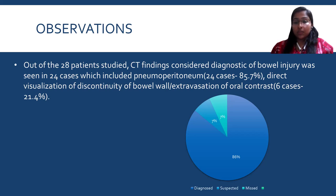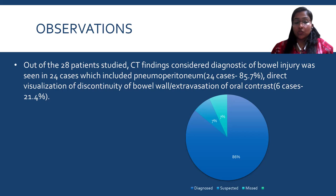Among the remaining 14%, 7% were suspected to have bowel injury. These were two cases in which pneumoperitoneum or accurate visualization of discontinuity was not seen; however, other features like bowel wall thickening, hypoenhancement, intramural air, intraperitoneal free fluid without solid organ injury, and mesenteric hematoma were seen, raising suspicion. These cases were found to have perforation intraoperatively.